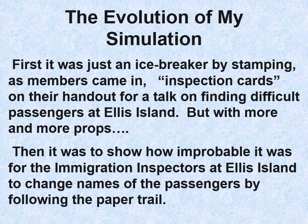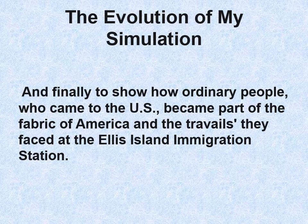I started doing this as an ice breaker by stamping inspection cards as members came in — which we'll talk about — on their handout for a following talk on finding difficult passengers at Ellis Island. But I like to collect things, so with more and more props I began to think of a full simulation. Then it was to show how improbable it was for immigration inspectors to change names, and finally it evolved to show how ordinary people who came to the U.S. became part of the fabric of America and the travails they faced at the immigration station.